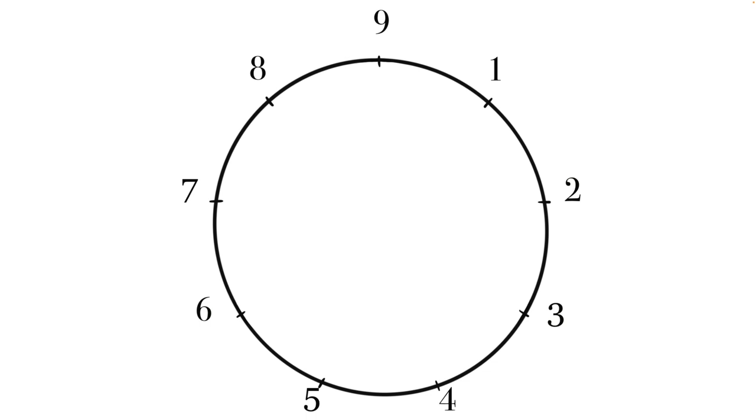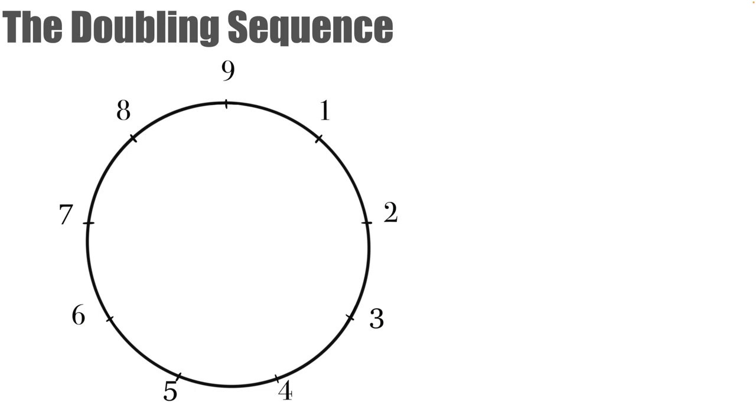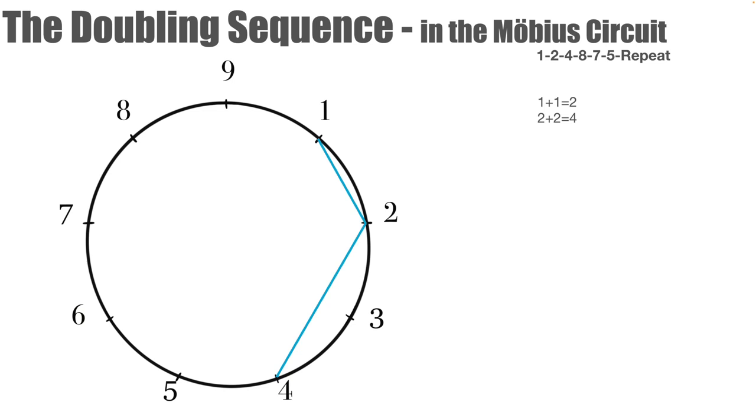The doubling sequence in the Mobius circuit creates the 1, 2, 4, 8, 7, 5 repeating pattern. We take one and we double it, so one plus one equals two, and then we draw a line from the one to the two. Then we take two and we double it and we draw a line to the four. We take four and double it and draw a line to the eight. So we take eight and double it, which equals 16, which is of course not shown on the cipher. This is where we need to learn the most fundamental function that is used in VBM, the method of reducing numbers with more than one digit back to their digital roots or their mod nine.